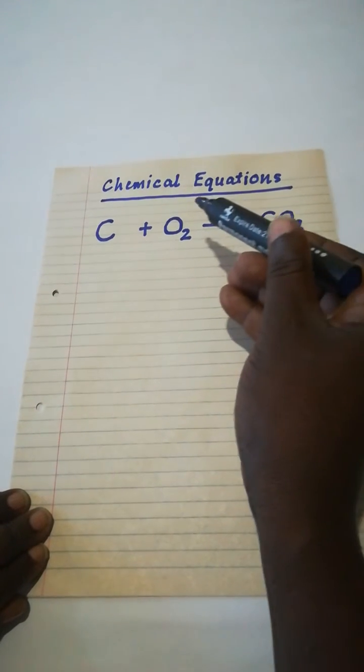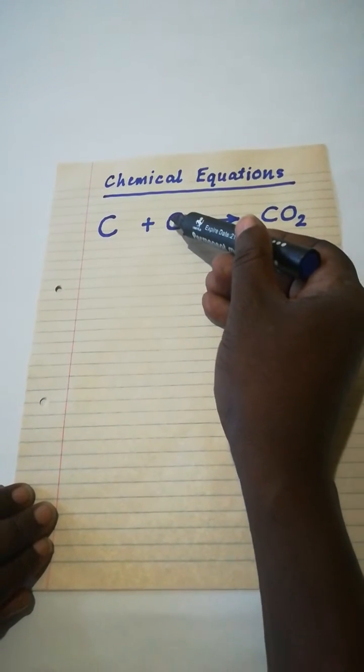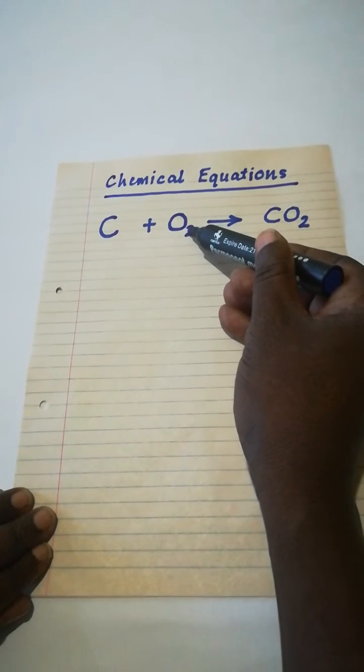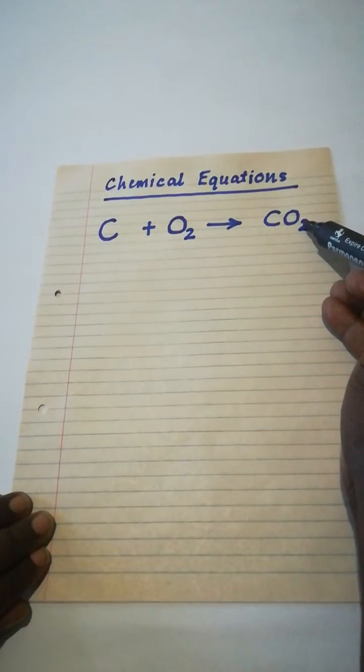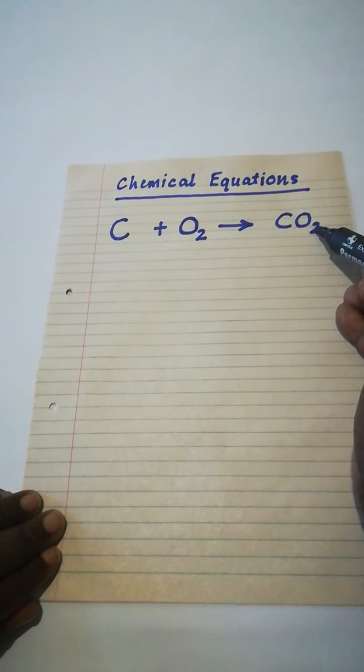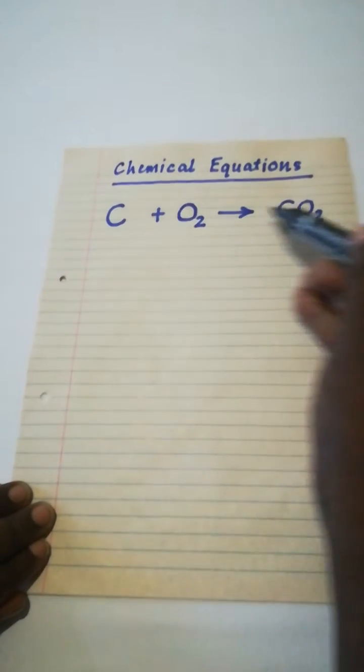Let us go to oxygen. Oxygen, we have two atoms on the left. On the right, we have two atoms. So, the equation is balanced.